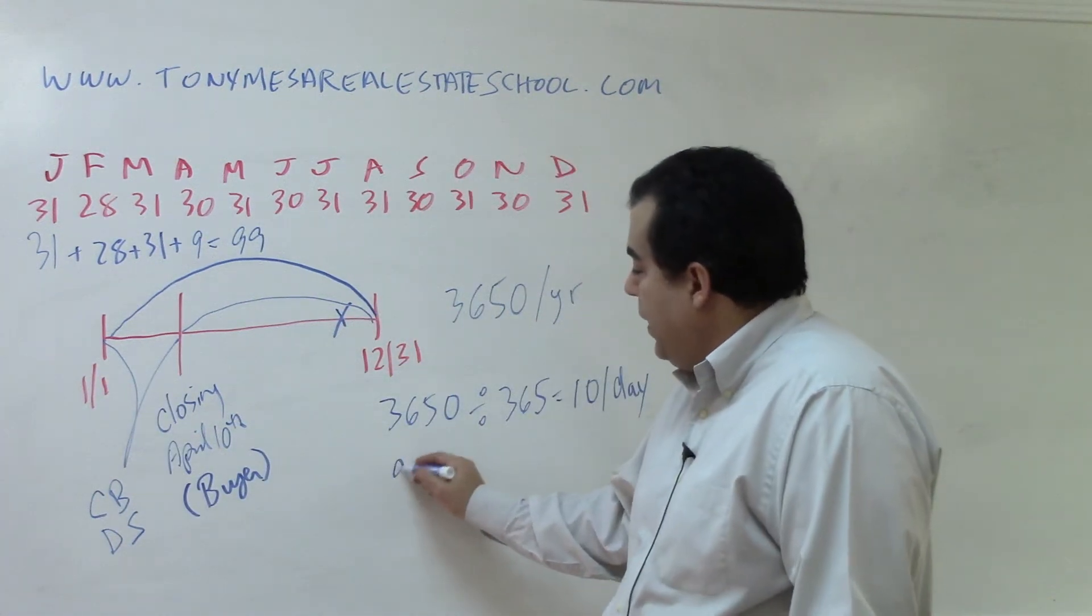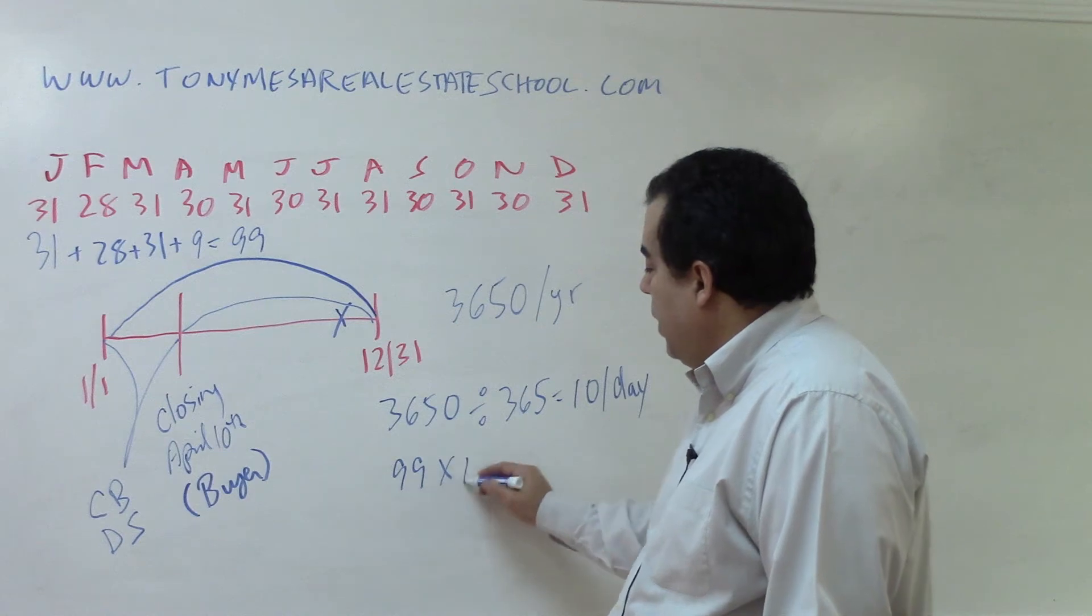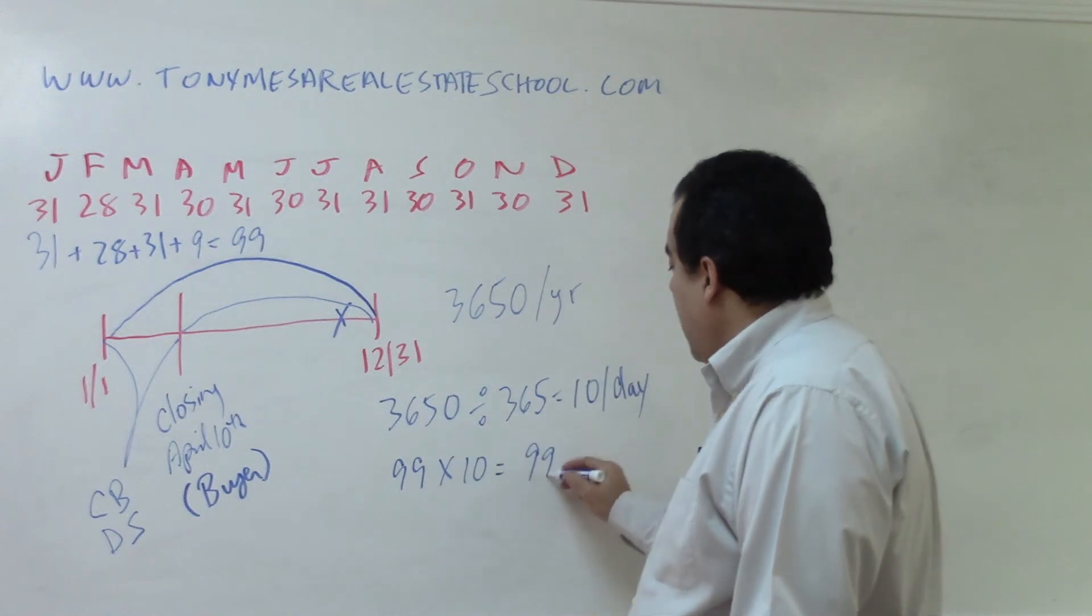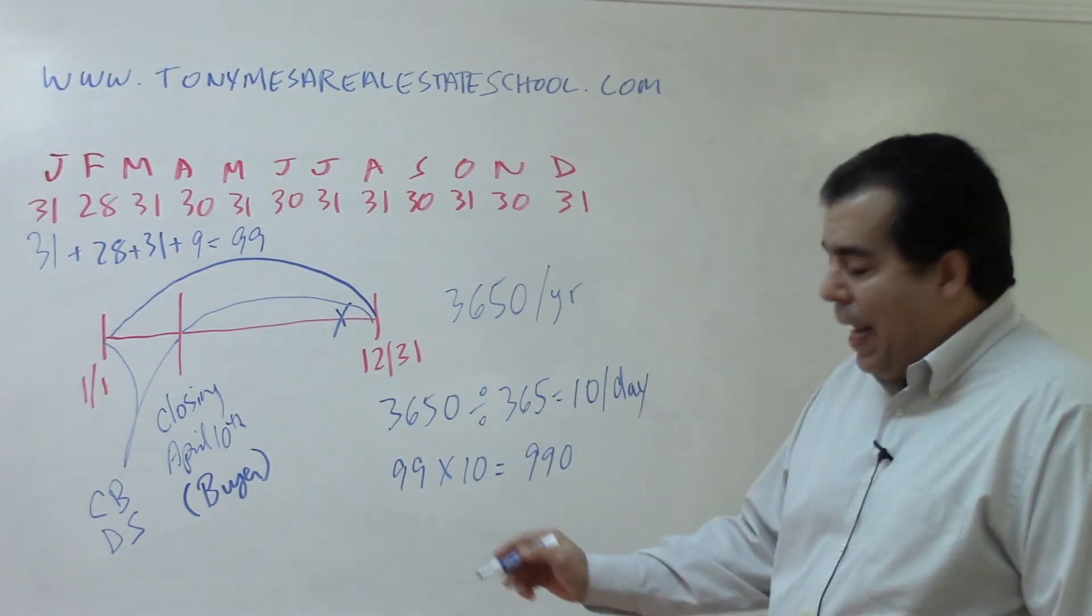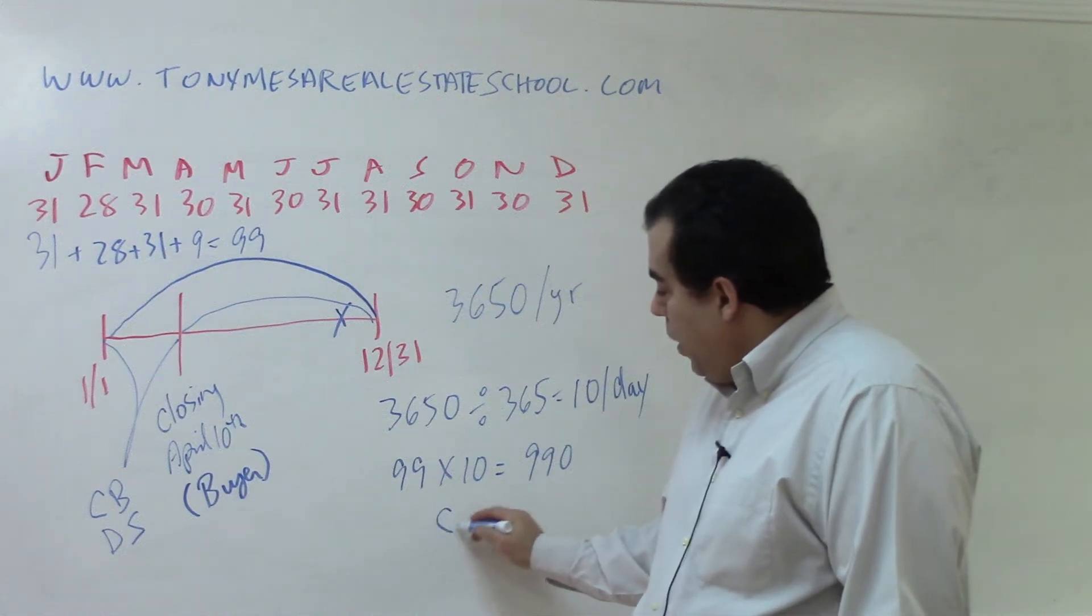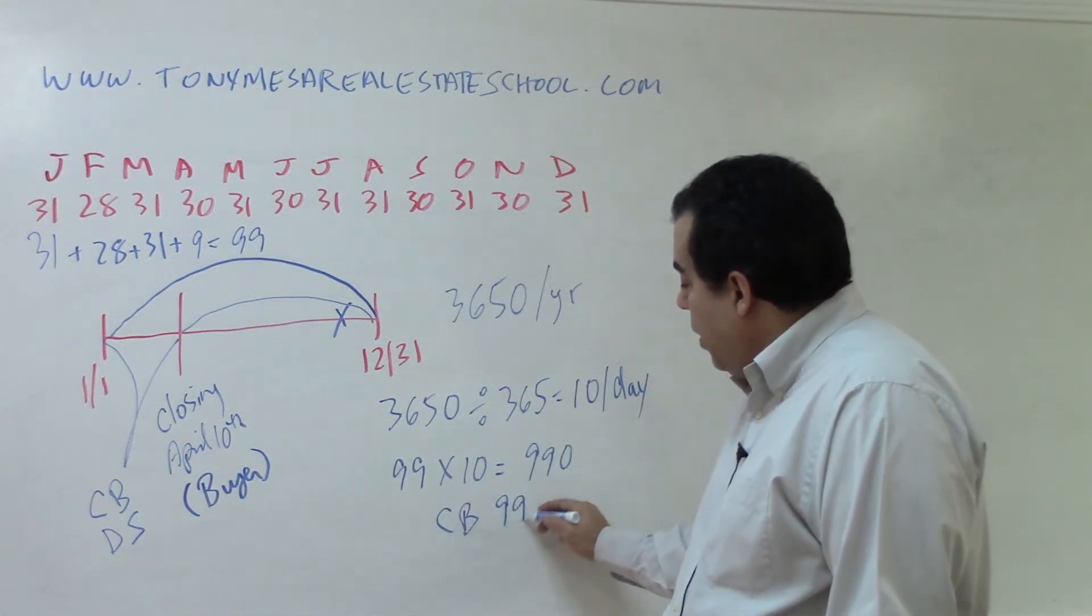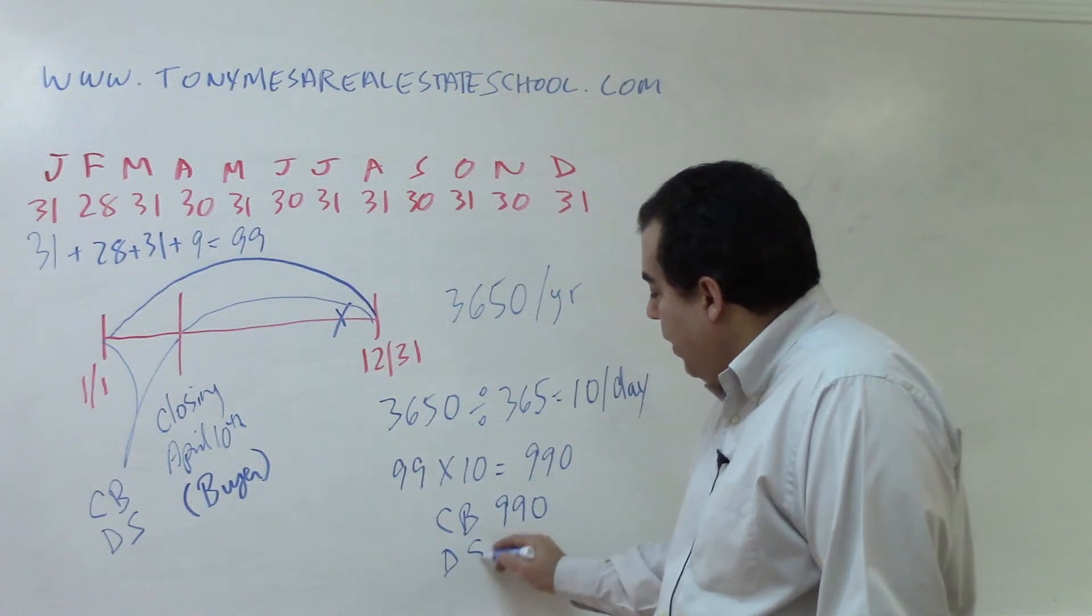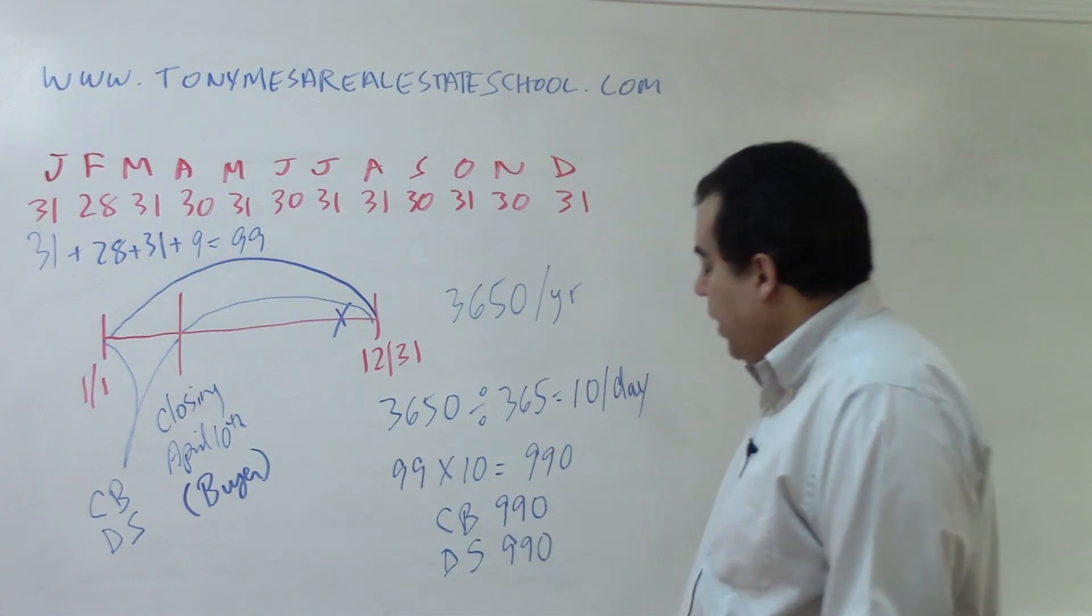So 99 days times $10 per day is $990. At the closing, we're going to credit the buyer $990, and we're going to debit the seller $990.